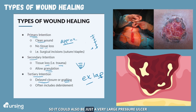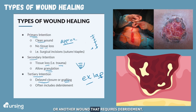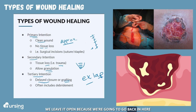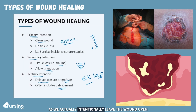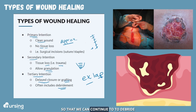It could also be a very large pressure ulcer or another wound that requires debridement — that's a big part of tertiary intention. We leave it open because we're going to go back in and take out the dead tissue pretty frequently while we wait for it to close up. So with tertiary intention, we actually intentionally leave the wound open so that we can continue to debride.